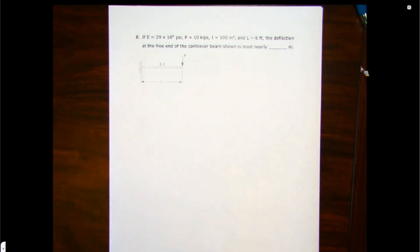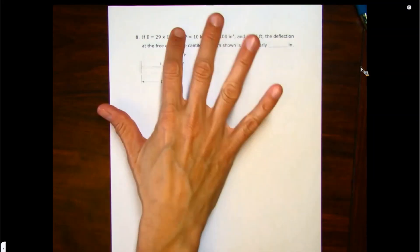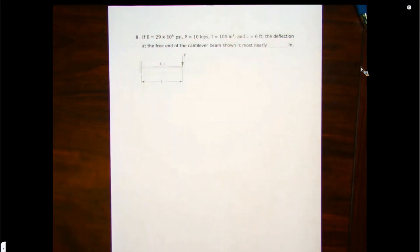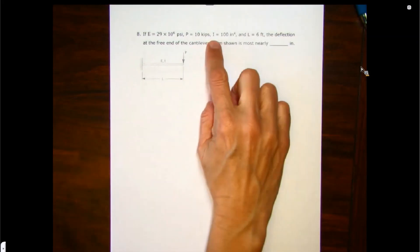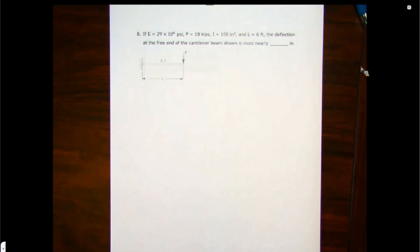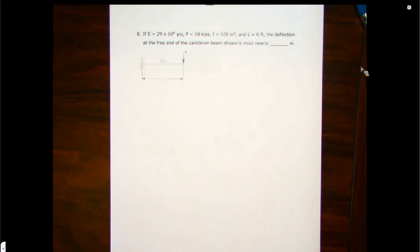Let's look at a cantilever. Away from the world of trusses into the world of cantilevers. Here we've got our same modulus of elasticity given to us in PSI, a loading of 10 kips, an area moment of inertia of 100 inches to the fourth, a length of six, and we want to know the deflection at the free end of the cantilever beam.